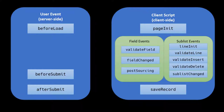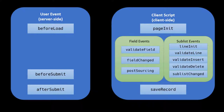At this point the form is fully loaded in the UI and the user is ready to start making changes. As they change fields, there's a series of field events that will fire: validate field, field changed, and potentially post sourcing. And as the user adds or changes lines — anything sublist related — there are a series of sublist events that get fired, including line init, validate line, validate insert, validate delete, and sublist changed.